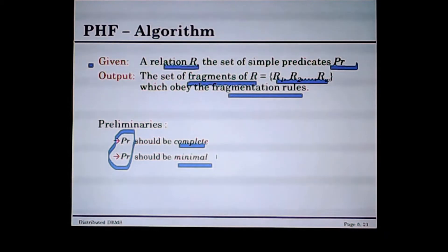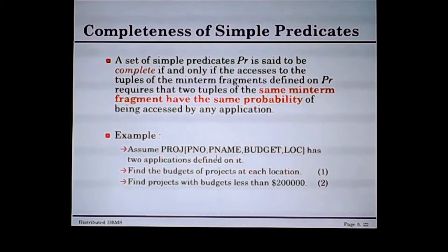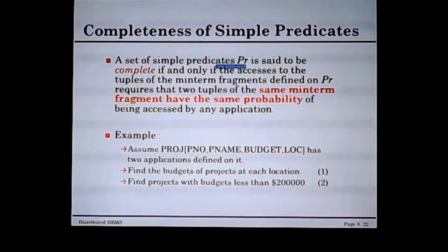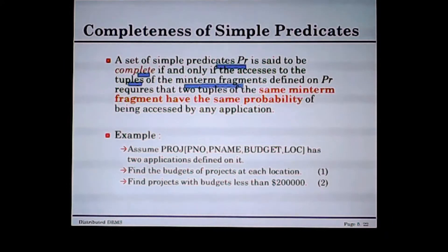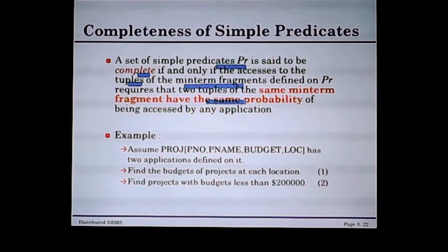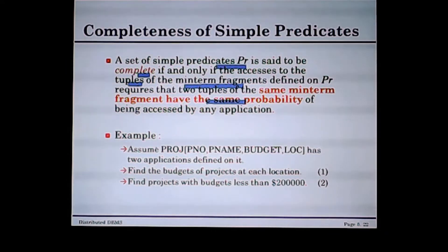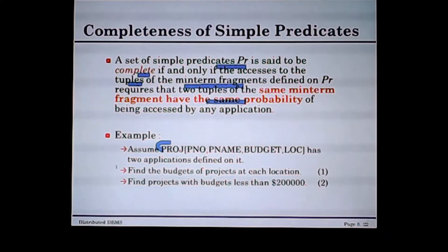On the next slide I will define the property of completeness. A set of simple predicates PR is said to be complete if and only if, for the set of tuples of the minterm fragments defined on PR, two tuples in the same minterm fragment have the same probability of being selected by any application. For example, consider a relation with four attributes and two applications.